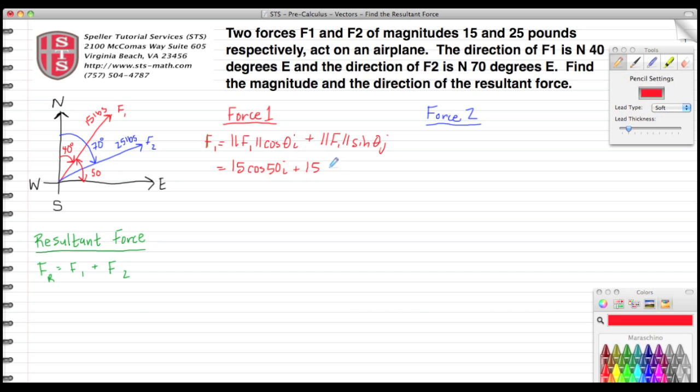Plus the magnitude again times sine 50 j. Using your calculator to evaluate 15 times cosine 50, that evaluates to 11.6418 i. And you evaluate 15 times the sine of 50, and that evaluates to 11.4907 j.